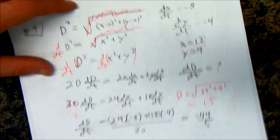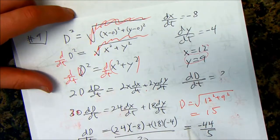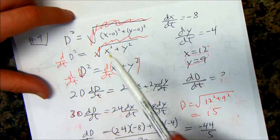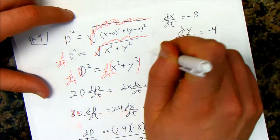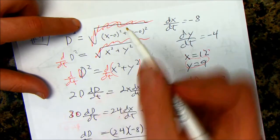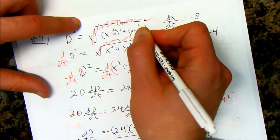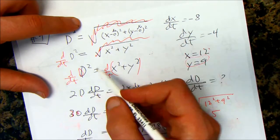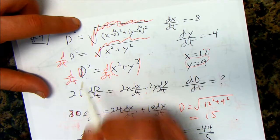And then divide all that by 30, and I have dD/dt. So I end up with, in my problem, I got negative 44 over 5. That's number 9. That was actually not too bad, but you had to think a little bit about which formula to use. They're only giving you words. They're not giving you a picture, but write down the distance formula.